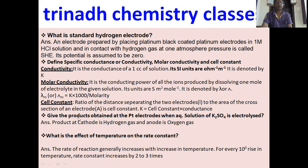What are the products obtained at the platinum electrodes when an aqueous solution of K2SO4 is electrolyzed?